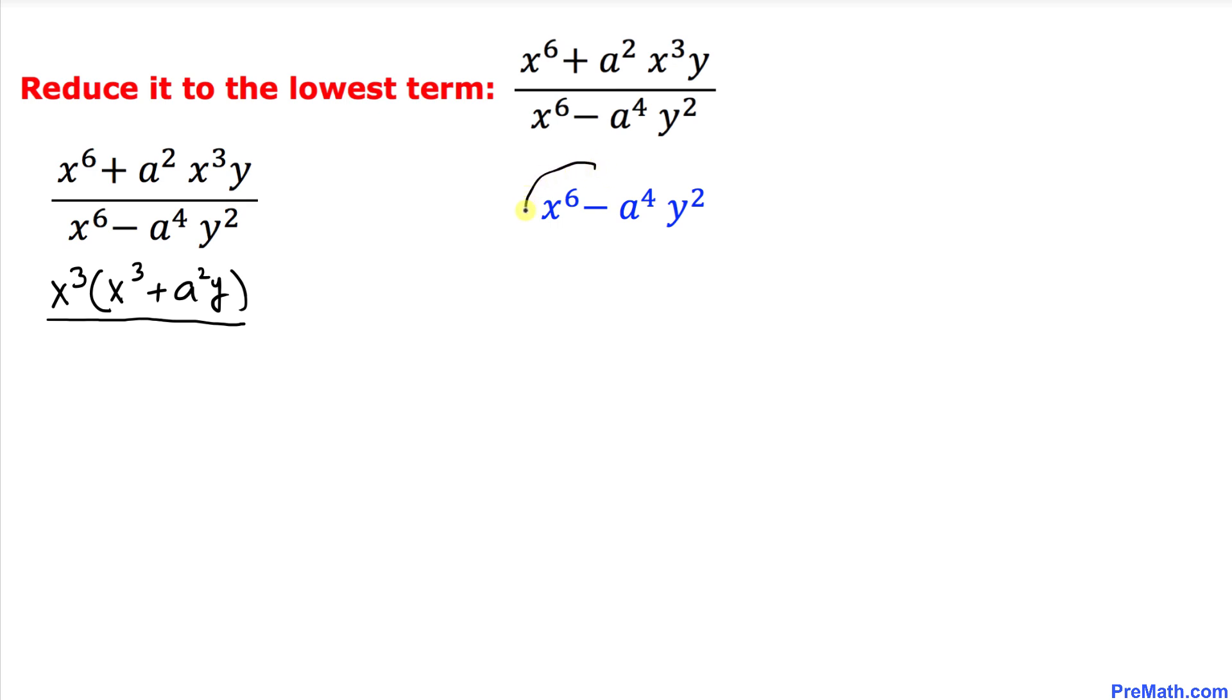Here I have copied it down as you can see. Now let's manipulate this polynomial by writing x^6 as (x^3)^2 using the well-known power rule. Likewise, this could be written as minus (a^2 y)^2.